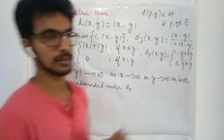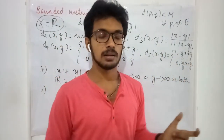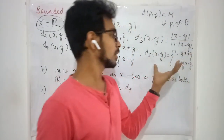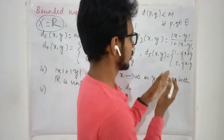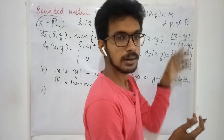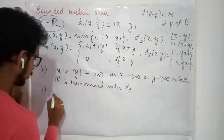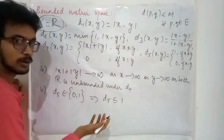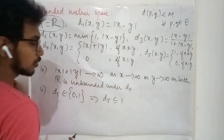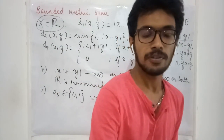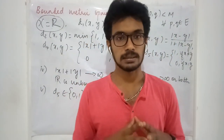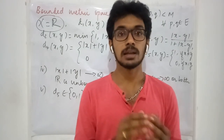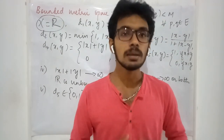Now the fifth case is the discrete metric, which as I mentioned in previous lectures can be defined on any space, including R. The discrete metric takes only the value 0 or 1 — it cannot take any other value. This clearly tells you that the metric is bounded. So under the discrete metric, R is also bounded. The key takeaway is that boundedness depends on the metric defined on the set — not on the set alone.